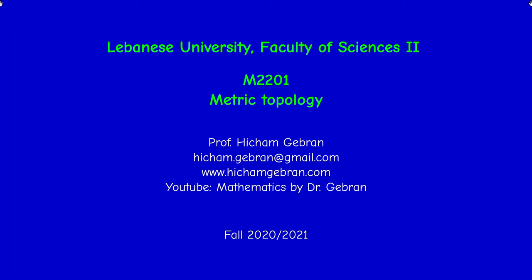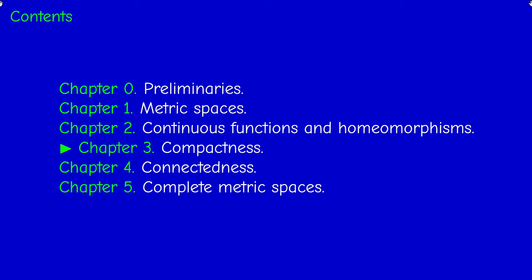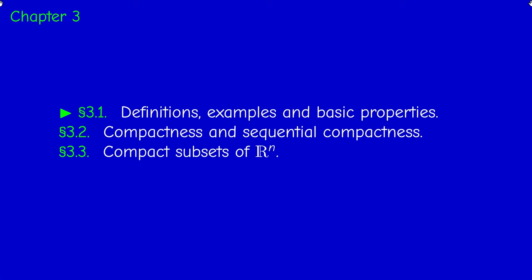Welcome back. In this video we start with Chapter 3 about compactness, which is the most difficult concept in this course. There will be three sections: the first section gives basic definitions and examples and proves some basic facts about compactness; the second section finds a relation between compactness and another important notion called sequential compactness; and the third section is devoted to compact subsets of R^n.